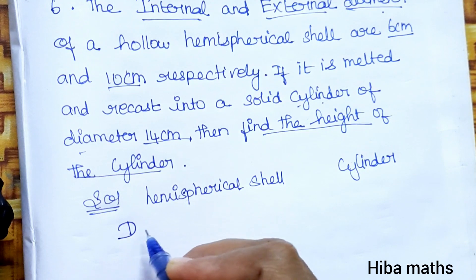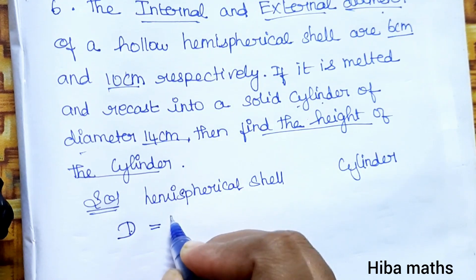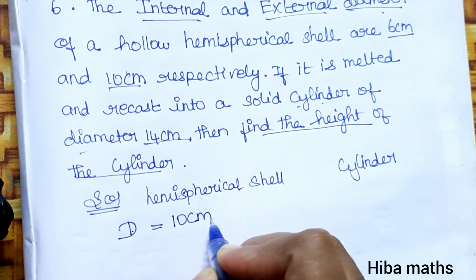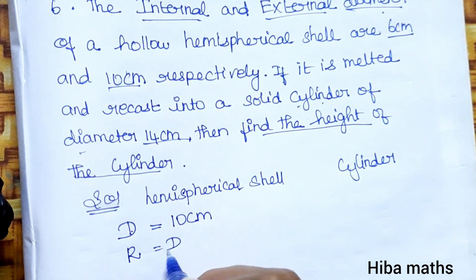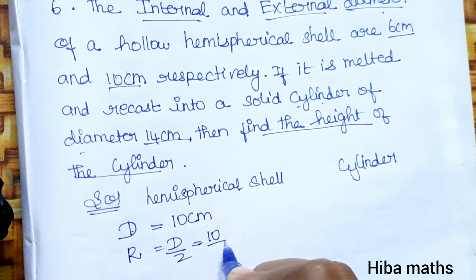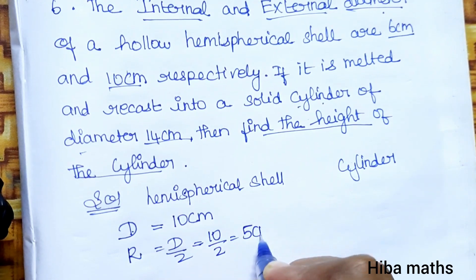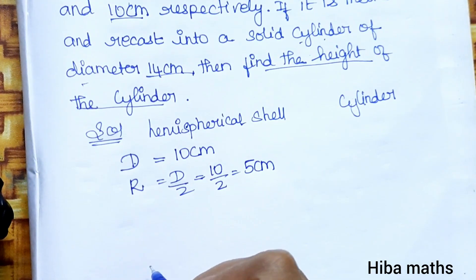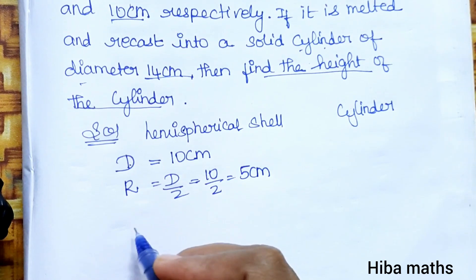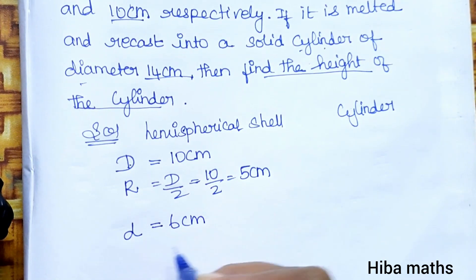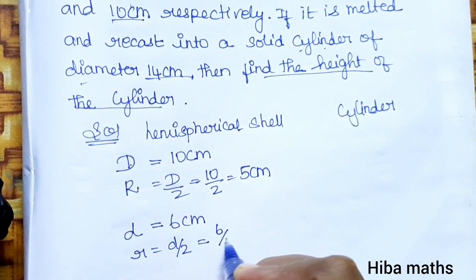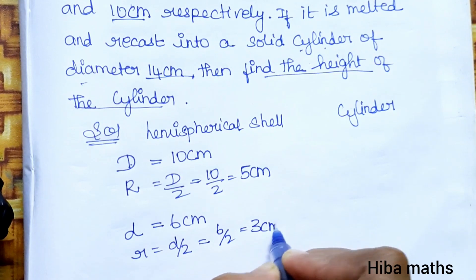The hemispherical shell has an external diameter of 10 cm, so capital R is equal to 10 divided by 2, that is 5 cm. The internal diameter is 6 cm, so small r is equal to 6 divided by 2, that is 3 cm.